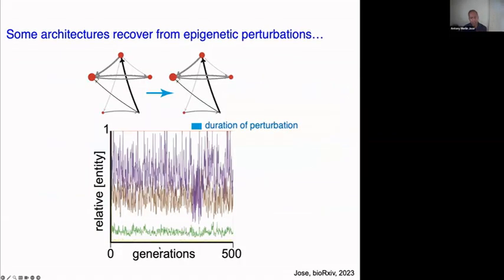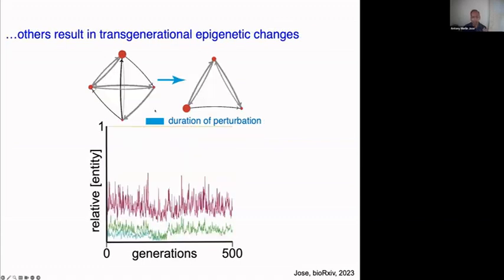All changes happening within regulatory architectures need to be systematically analyzed. We found really two broad classes: architectures where, if you reduce any one entity by twofold for several generations, the entire architecture bounces back without any entity going to zero; and architectures where reducing an entity by twofold produces an altered architecture that now persists. These types of reduction experiments are very similar to the gene silencing I discussed at the beginning.